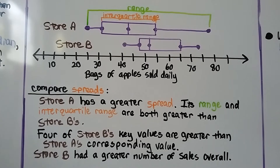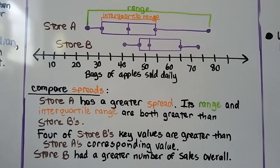Remember from the previous videos, the key values are the least value — that's the minimum — the greatest value — that's the maximum — the median, and the upper and lower quartiles.